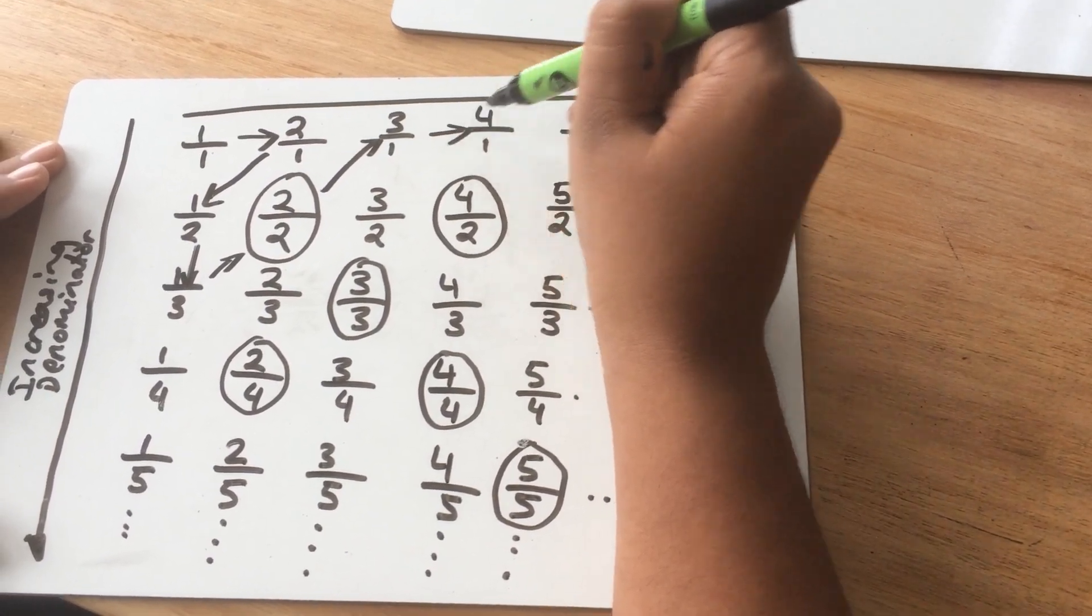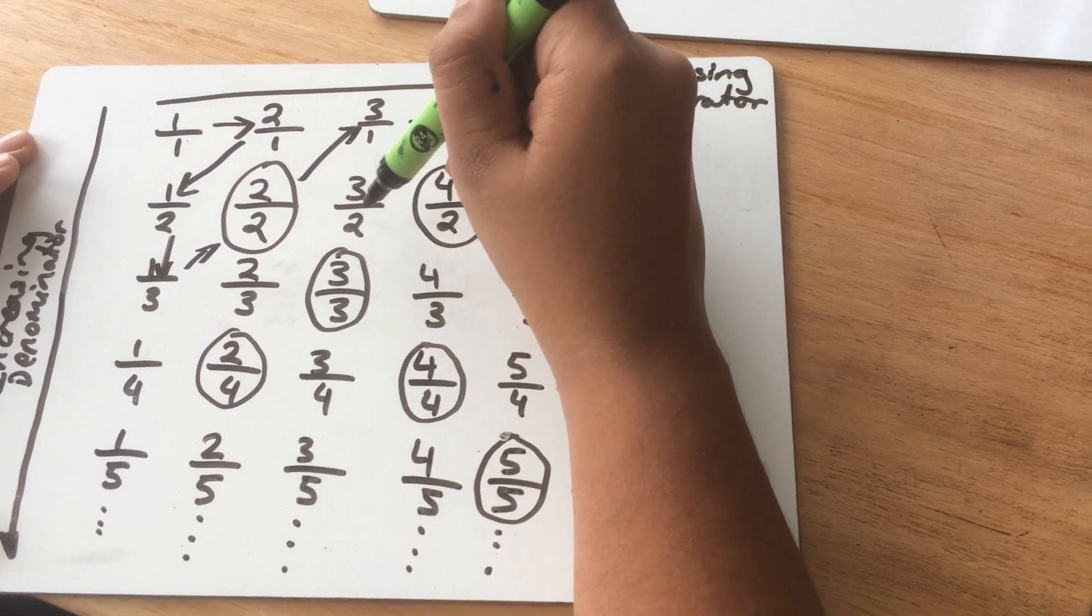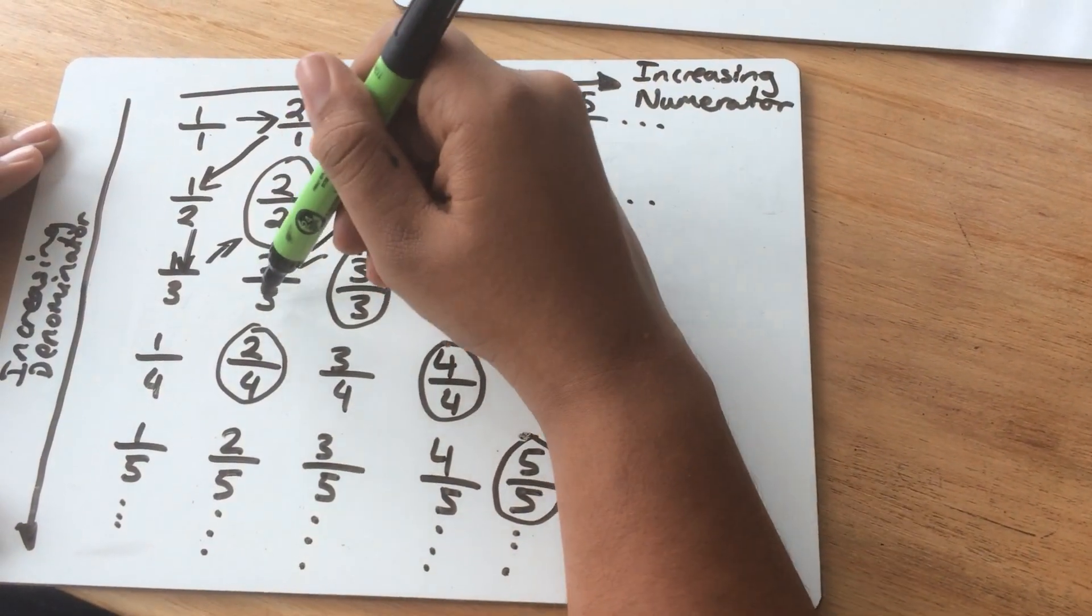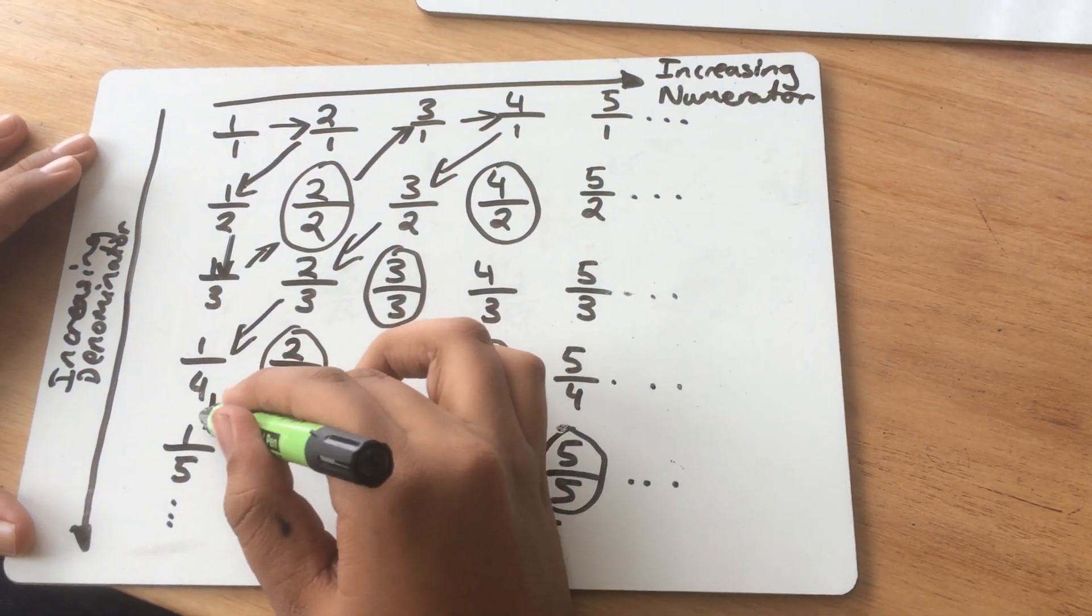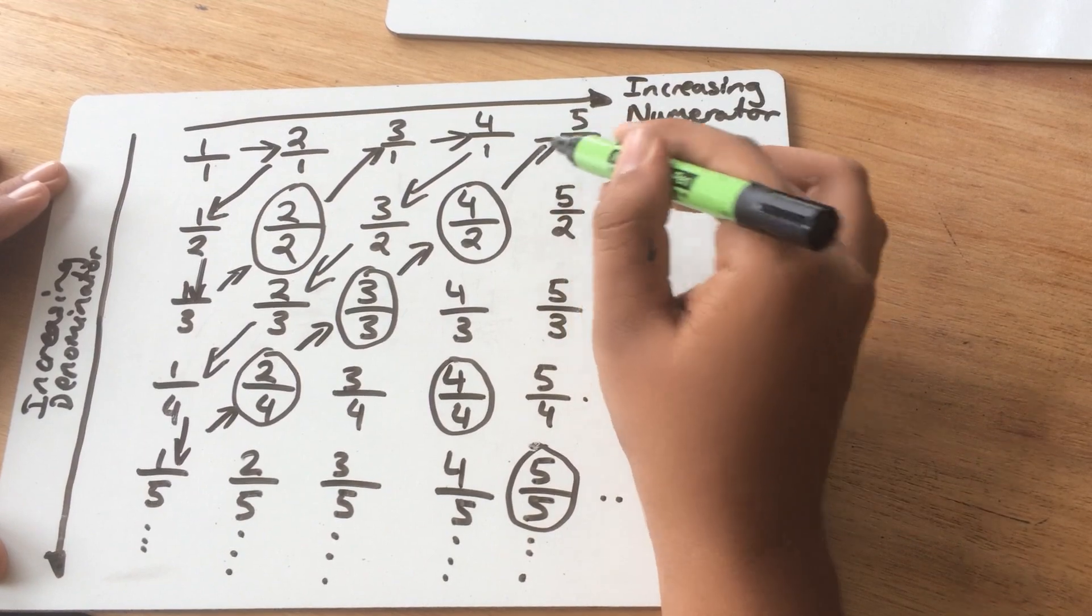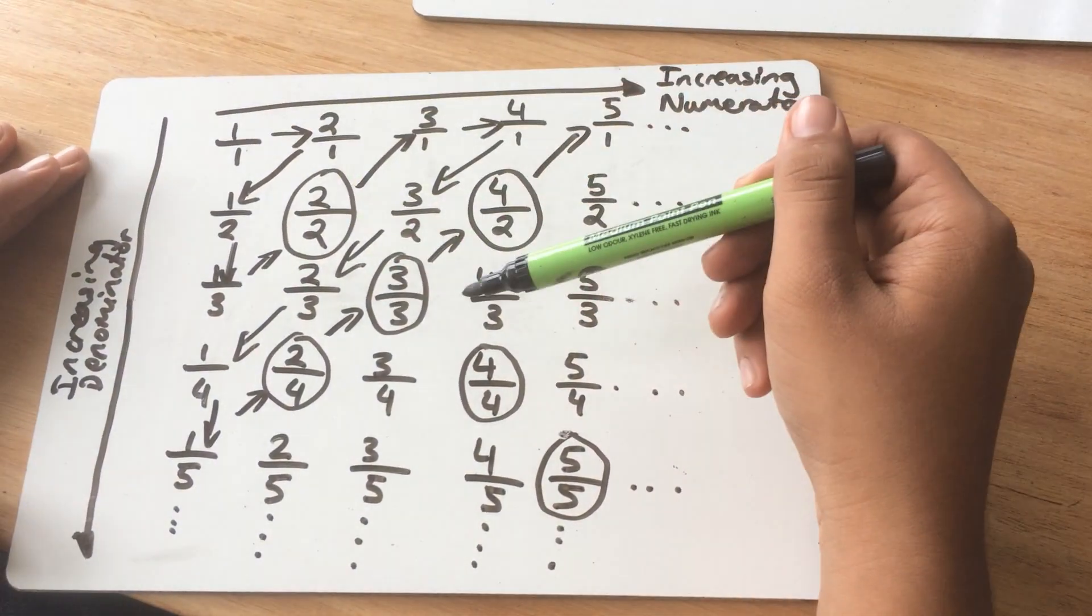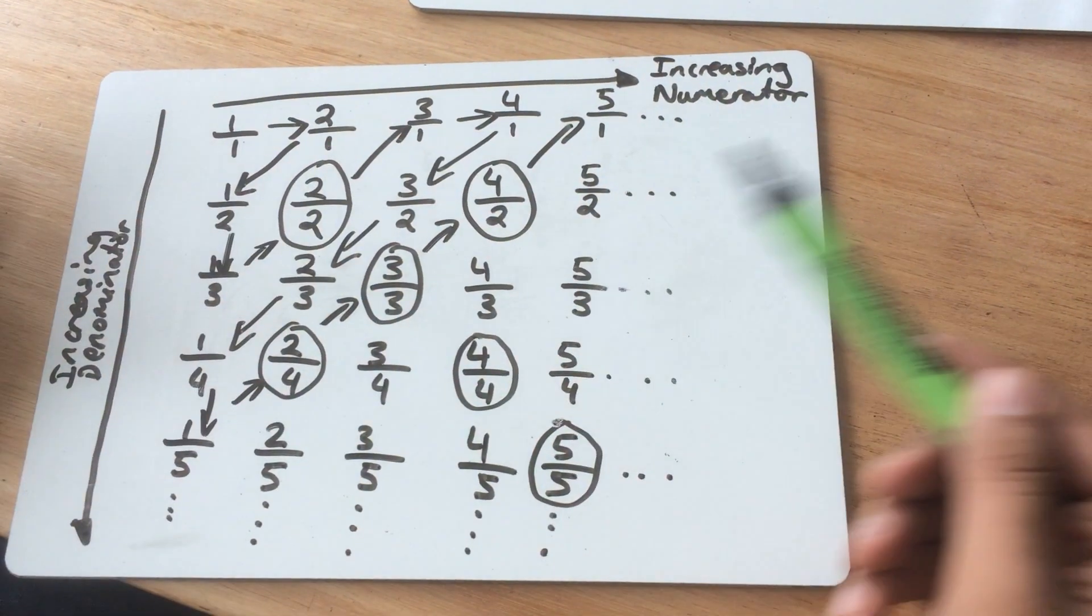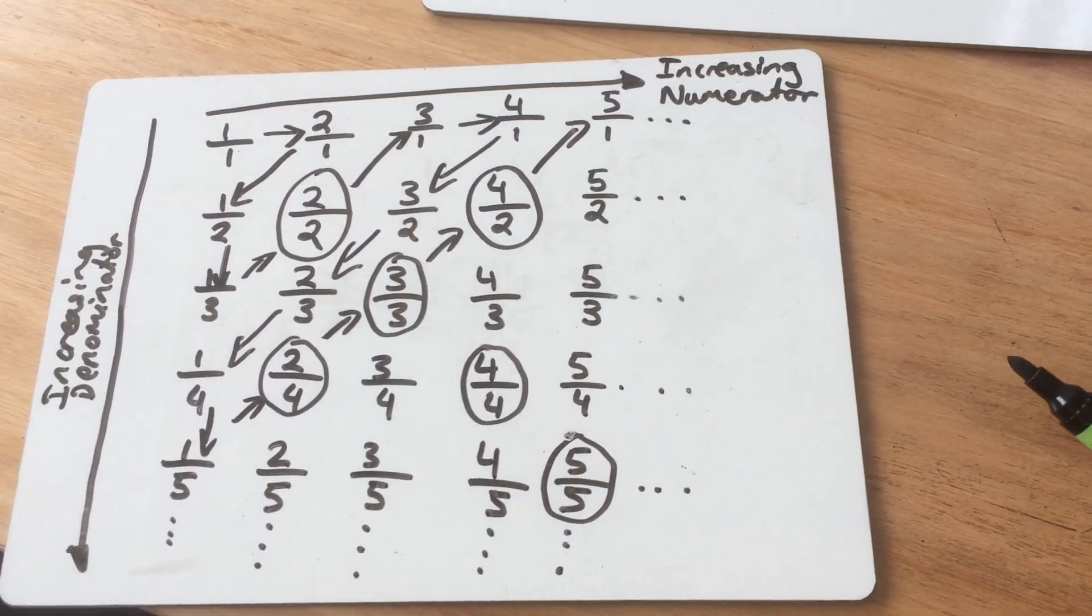Then we go to 4 over 1. We go diagonally down to 3 over 2. Then to 2 over 3. And then to the reciprocal, 1 over 4. And we continue in this pattern, skipping the circled fractions. And like that, we will cover each and every fraction without missing one. But we'll keep on going for infinity. So that is the way to count rational numbers.